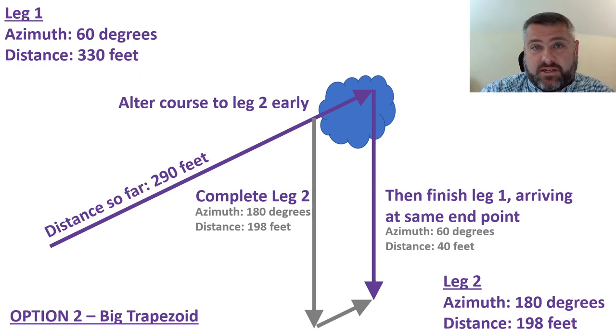You can also do this where you simply make a really large trapezoid. You could really switch over at any point and the math works the same. If this is simpler for you, simply switch to leg two early, complete the entirety of leg two, and then just know that at the end of it you have to complete the end of leg one that you forgot. That was that 60 degrees at 40 feet.